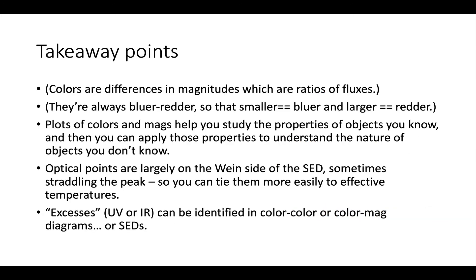The main takeaway points for optical color-magnitude and color-color diagrams. Remember that colors are differences in magnitudes, which are also ratios of fluxes, and they're always bluer band minus redder band so that a smaller color is bluer and a larger color is redder. When you make plots of colors and magnitudes, it helps you understand the properties of objects you know, and then once you establish that, you can apply those properties to understand the nature of objects you don't know.